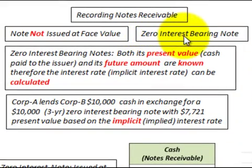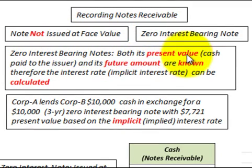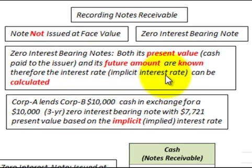Here we're going to be looking at a zero interest bearing note. A zero interest bearing note is not going to have any stated rate of interest or any interest payments, and it's not issued at its face value. Both its present value and the cash paid to the issuer and its future amount are known, and therefore the implicit interest rate can be calculated.